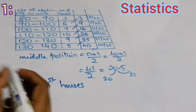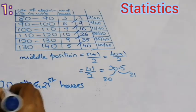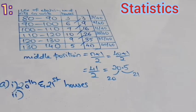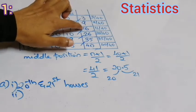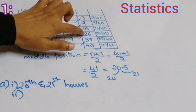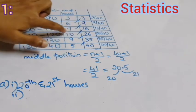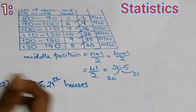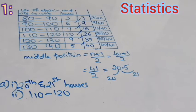Now, what is the class interval for these houses? Looking at the cumulative frequencies: up to 16 houses fall in the interval up to 110, and up to 26 houses fall in the next interval. So from the 17th to the 26th house, they belong to the class interval 110 to 120.